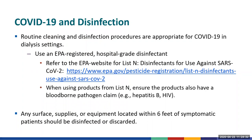The routine cleaning and disinfection procedures discussed so far are all appropriate for COVID-19 in dialysis settings, as long as you use an Environmental Protection Agency (EPA) registered disinfectant designated for use against SARS-CoV-2, the virus that causes COVID-19. The EPA has a list of these products, called List N, available on their website — which is shown on the slide — or you can find a link to this list on the CDC website. For dialysis, it is especially important to ensure the product chosen has a bloodborne pathogen claim as well. Any surfaces, supplies, or equipment located within six feet of a symptomatic COVID-19 patient should either be disinfected or discarded if it cannot be disinfected.